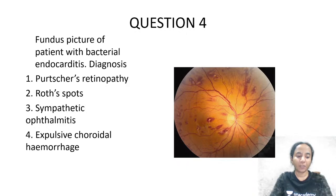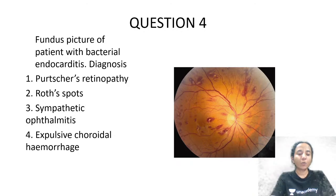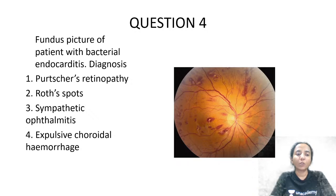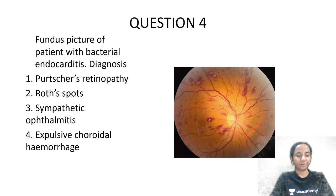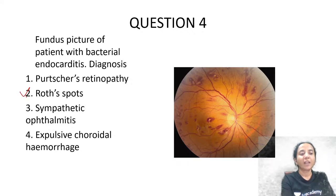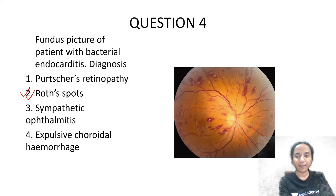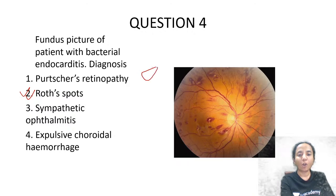Next, this is the fundus picture of a patient who presents with bacterial endocarditis. The diagnosis is Roth spots. These are elongated, flame-shaped hemorrhages on the retina, but you will notice there is a central clearing — the central part of the hemorrhage is clear.